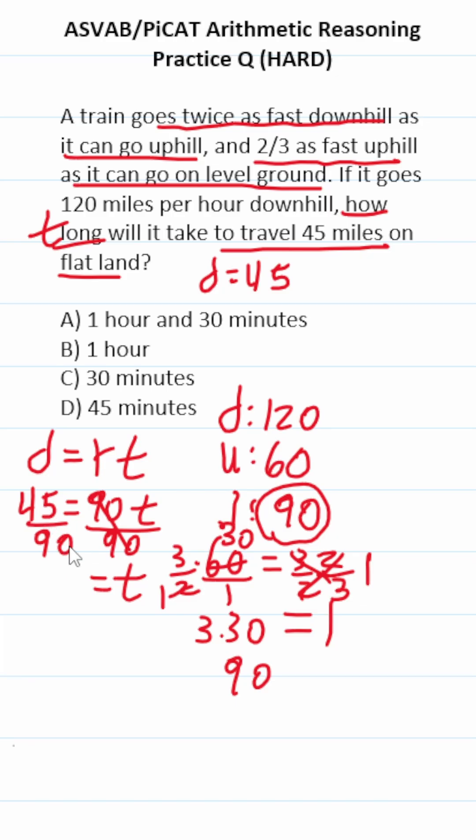45 over 90 reduces to one half. 45 divided by 45 is 1, 90 divided by 45 is 2. In other words, it's going to take this train half an hour to cover those 45 miles. So the answer is C.